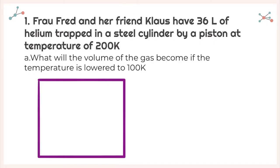For our first question: Fred and his friend Klaus have 36 liters of helium trapped in a steel cylinder by a piston at a temperature of 200 degrees Kelvin. What will the volume of the gas become if the temperature is lowered to 100 Kelvin? In order to see what's happening, let me add some particles to my little piston here.